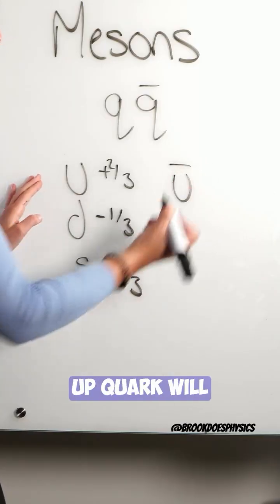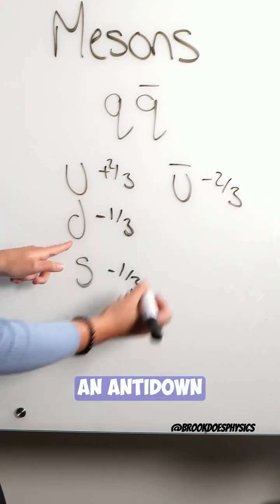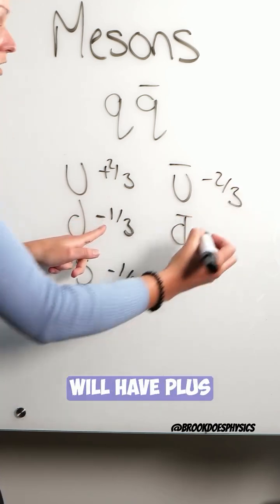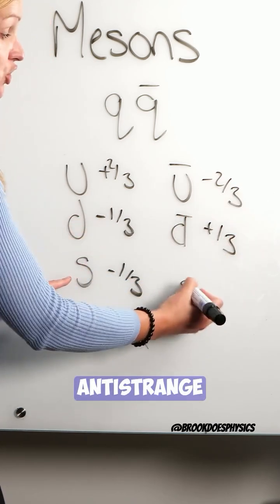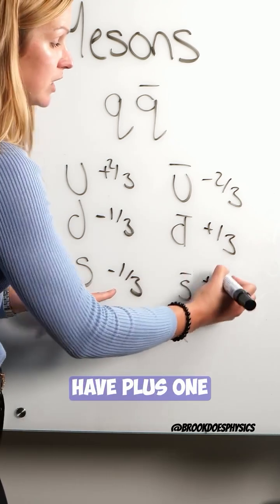So an anti-up quark will have minus two-thirds charge, an anti-down quark will have plus one-third charge, and an anti-strange quark will also have plus one-third charge.